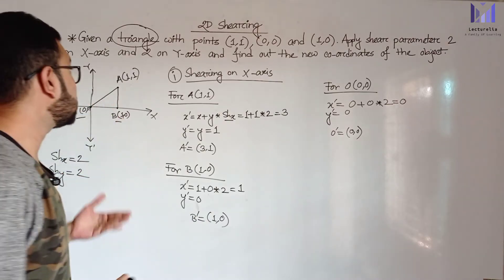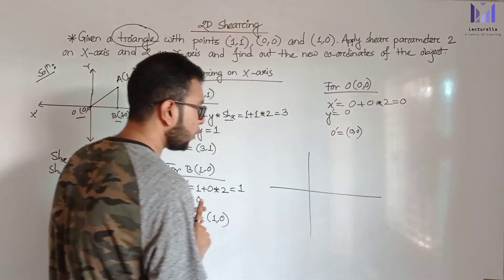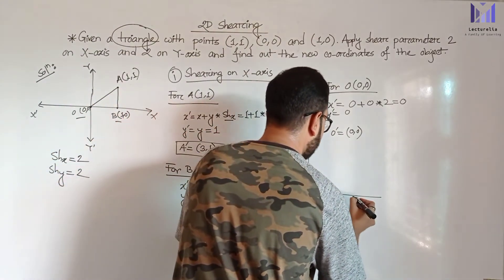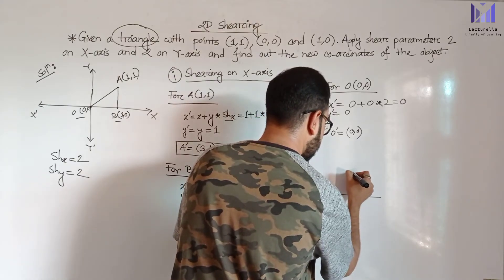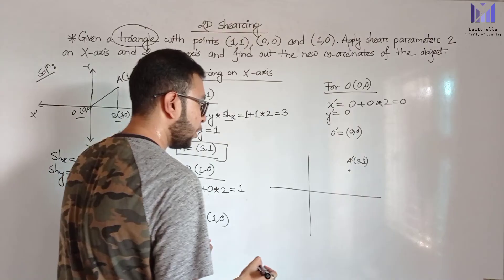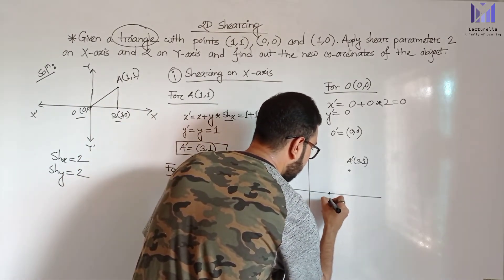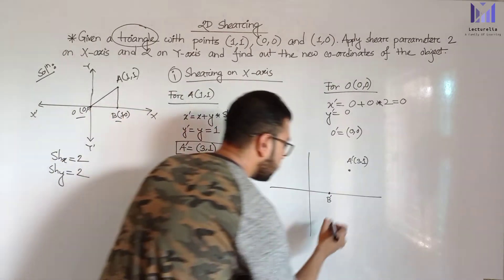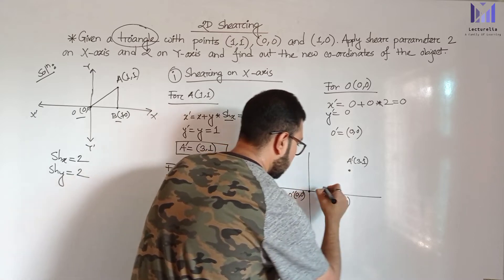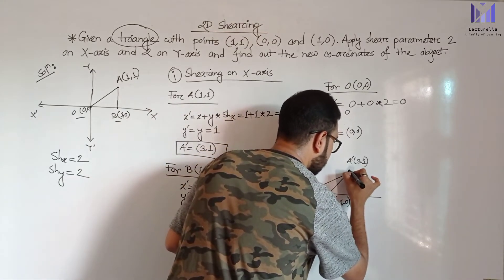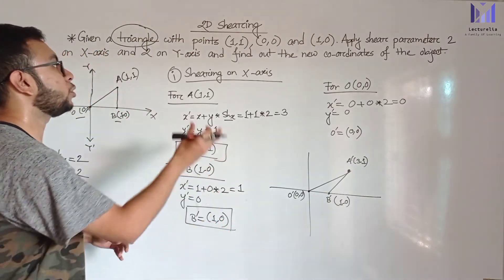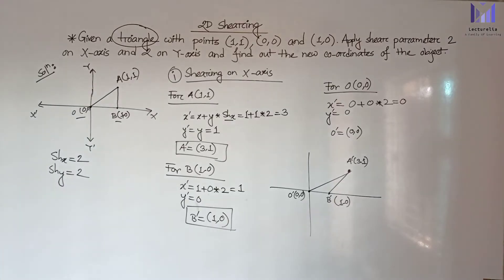So after shearing on X-axis, A prime is (3,1), B prime is (1,0), and O prime is (0,0). The shape of the object has changed - we can see the new coordinates. The triangle shape has been transformed by the shearing on X-axis. Now we go to shearing on Y-axis.